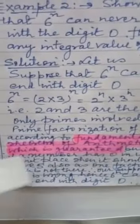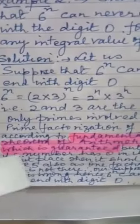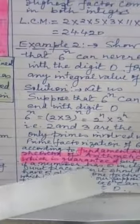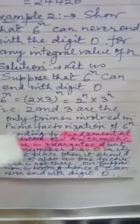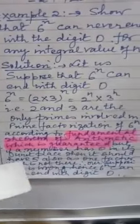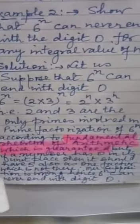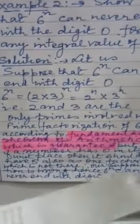by fundamental theorem of Arithmetic, we can write 6 to the power n as 2 to the power n into 3 to the power n. That is, 2 and 3 are the only primes involved in the prime factorization of 6 to the power n according to fundamental theorem. And if a number has to end with the digit 0, then 5 must be involved in its prime factorization, which is not here in the prime factorization of 6 to the power n, which contradicts our supposition. Therefore, we can say that 6 to the power n can never end with the digit 0.